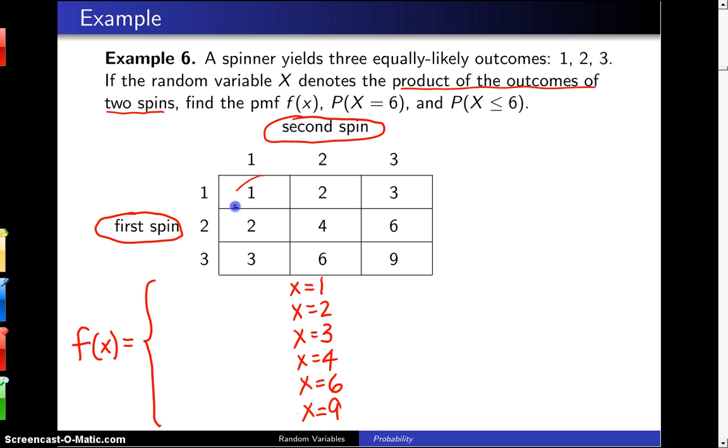The probability that the product of the two outcomes is 1 is 1 in 9 because all 9 of these outcomes are equally likely. The probability that the product is a 2 is 2 ninths. The probability that the product is a 3 is also 2 ninths. The probability that the product is a 4 is 1 ninth.